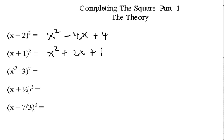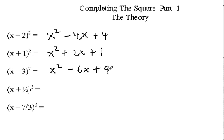Squaring the next binomial, we get x squared, x times negative three doubled gives negative six x, and negative three squared gives plus nine. It's very important to understand that when we square a binomial, you don't just square the first term and subtract the second term squared — you're going to get three terms every time.